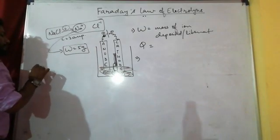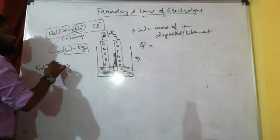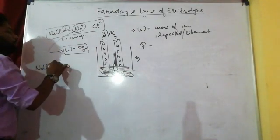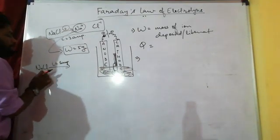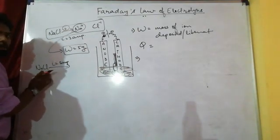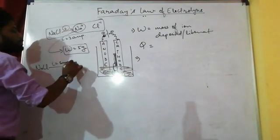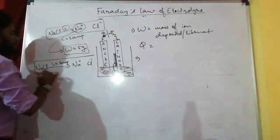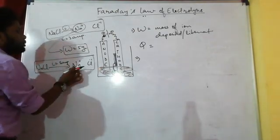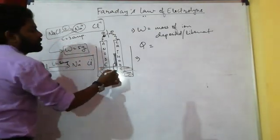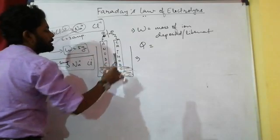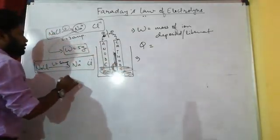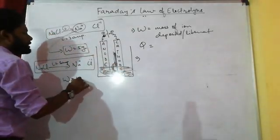Now if we increase the current — suppose it is higher — then dissociation is higher. If dissociation is higher, then the amount of ions deposited is higher, and therefore the weight of the deposit is higher — suppose 10 grams. So W is proportional to current I.